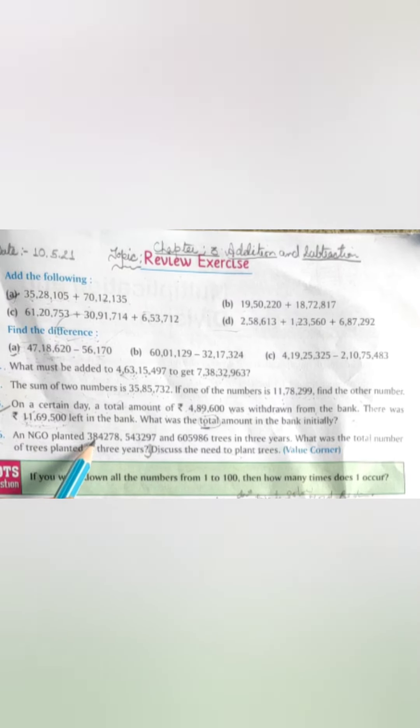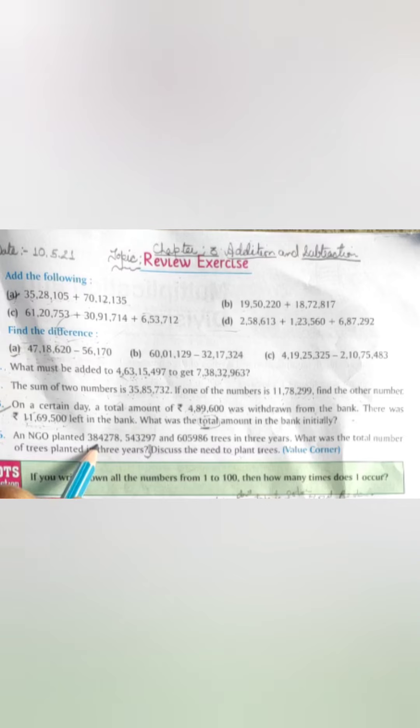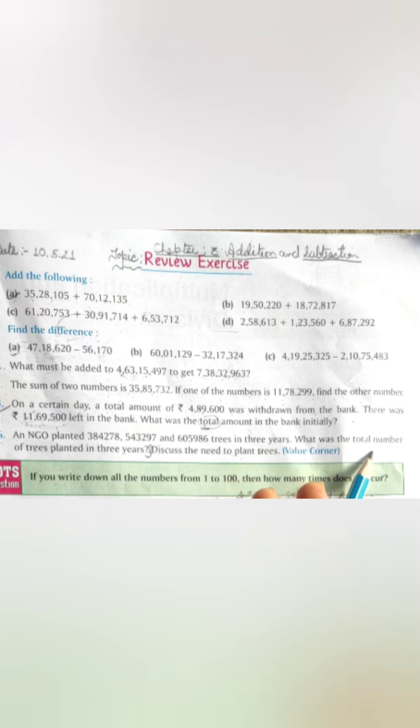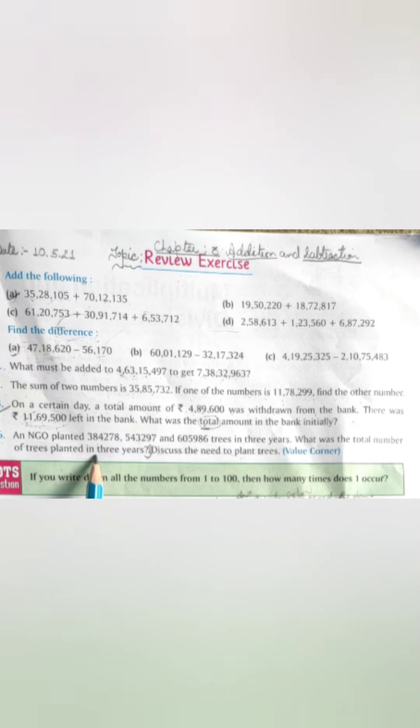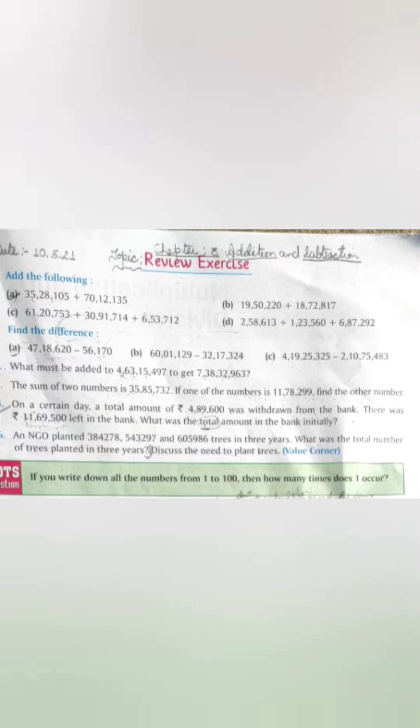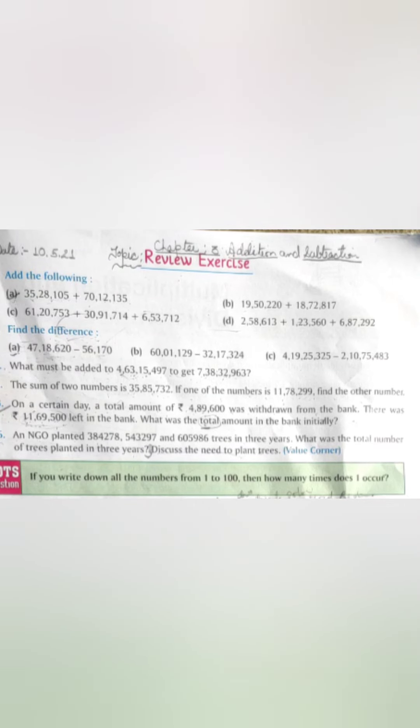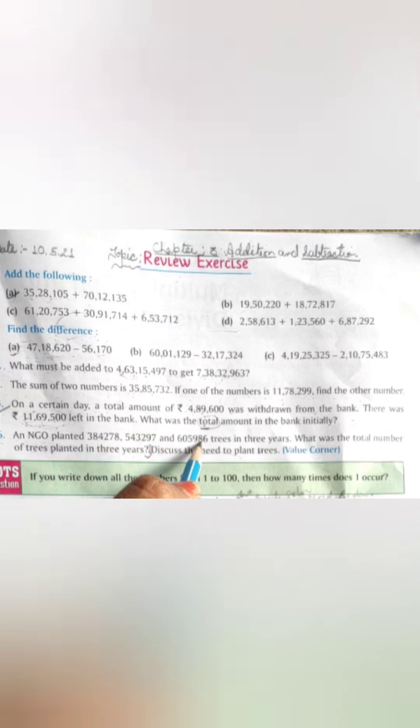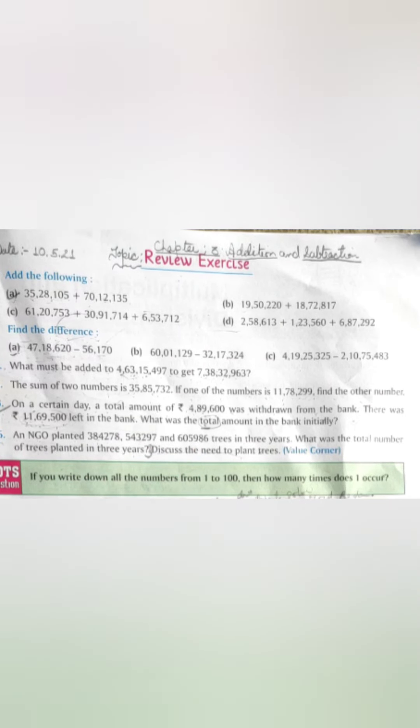Question number 6. An NGO planted this, this, and this trees in 3 years. What was the total number of trees planted in 3 years? In this question, we will find out the total number of trees in 3 years. So we add all the 3 numbers and we get the total number of trees planted in 3 years.